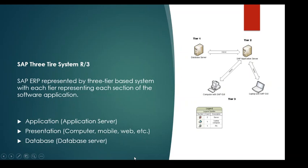SAP is an R3 system. Currently we have SAP ECC, and now SAP S/4 HANA as well, though R3 is still in the market. R3 stands for a three-tier system: the three tiers are the database server, the application server, and the presentation layer — which is the GUI, a phone, or a web browser where you log on to SAP.